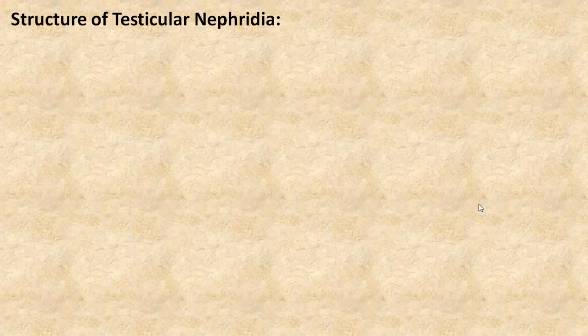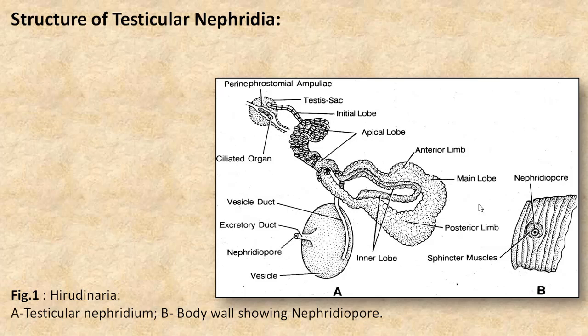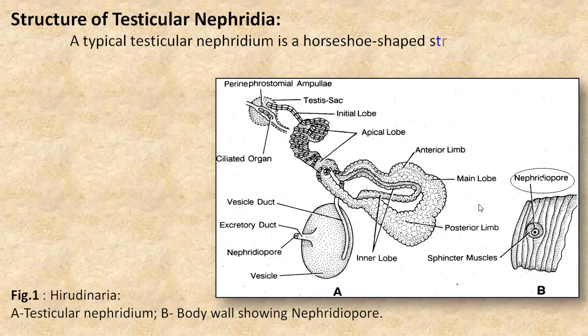Now we will see the structure of testicular Nephridia. This is the complex structure of testicular Nephridia and body wall showing the Nephridiopore. A typical testicular Nephridia is a horseshoe-shaped structure.